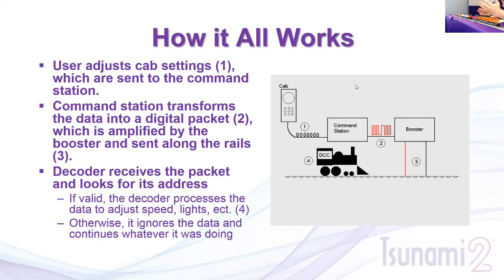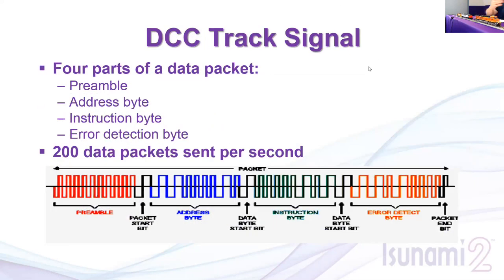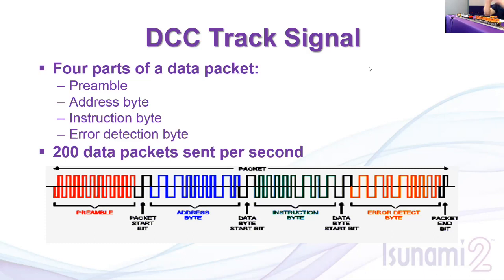The DCC signal is prefaced with an address intended for a particular locomotive. If the decoder address matches that of the command, it performs the task. If the decoder address does not match, it continues doing whatever it was doing — whether sitting still, moving, blowing the horn, or whatever else — until it's told to do something different.